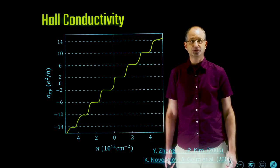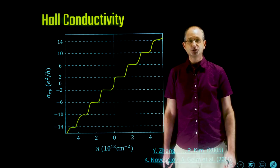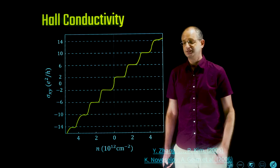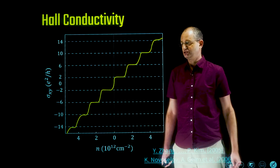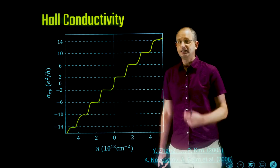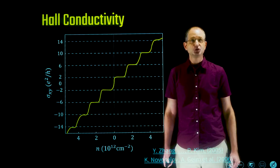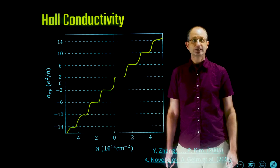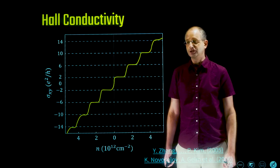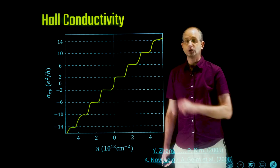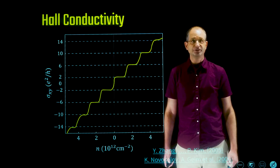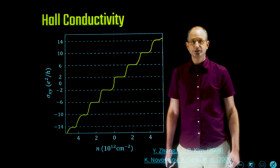To summarize: in this lecture we saw the unique Landau level spectrum of Dirac electrons and how it manifests in the Hall conductivity of graphene — the key achievement of the first works that both isolated a single graphene sheet and identified its Dirac spectrum. Thanks for watching.